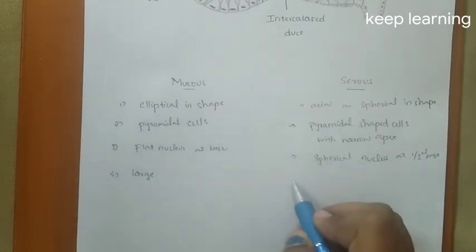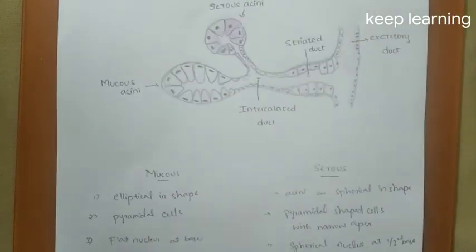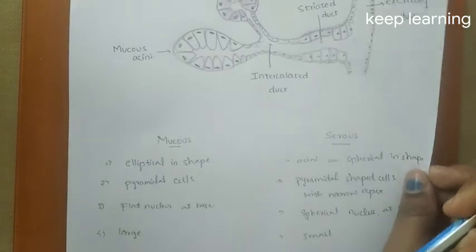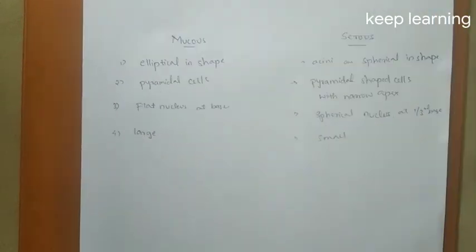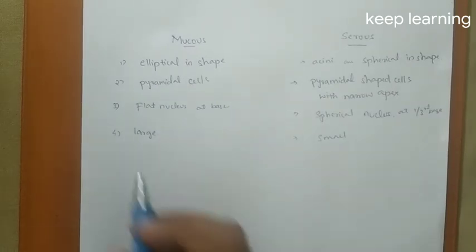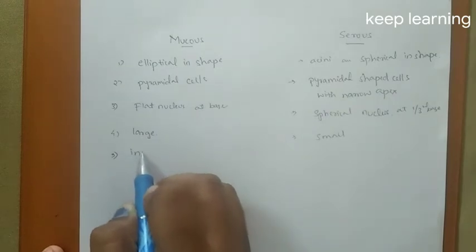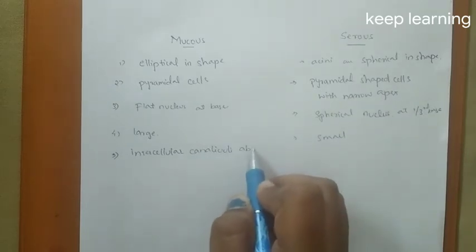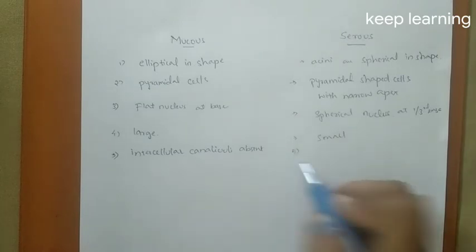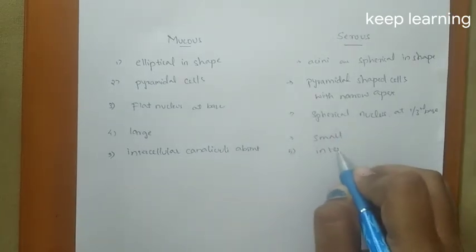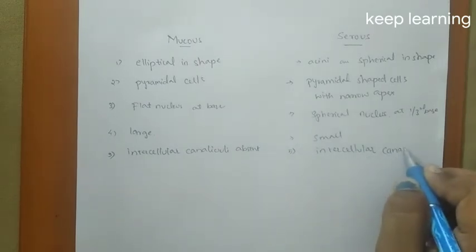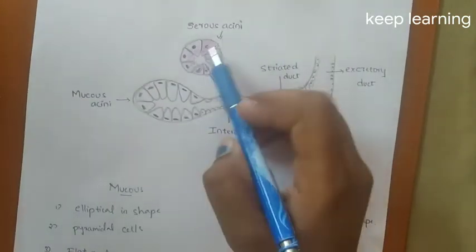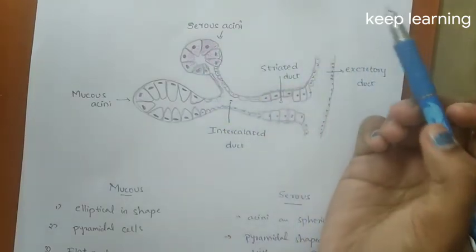Mucous acinae are large, whereas serous acinae are small — in the picture we can see it is elliptical and somewhat larger than the serous acinae. In the mucous acinae there is no intercellular canaliculi — intercellular canaliculi is absent — but in the serous it is present. In the picture, this star-shaped structure is called the intercellular canaliculi, and it is absent in the mucous acinae.